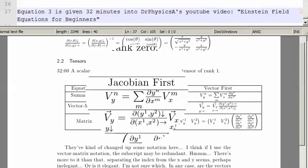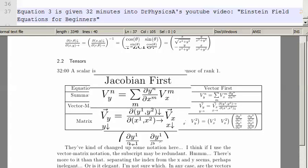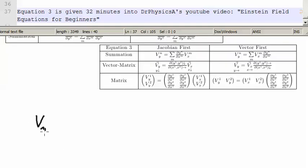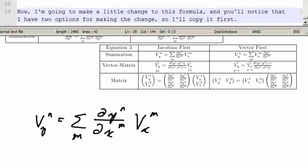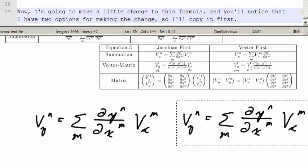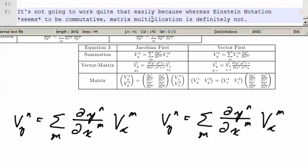Equation 3 is given 32 minutes into Dr. Physics A's used YouTube video Einstein Field Equations for beginners. And I think it's given in this form here. v sub y sup n equals the sum over m del y n del x superscript m v sub x superscript m. Now I'm going to make a little change to this formula. And you'll notice that I have two options for the change depending on whether I do Jacobian first or vector first. It's not going to work quite that easily because whereas Einstein notation at least seems to be commutative, matrix multiplication is definitely not.